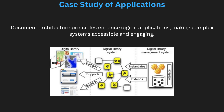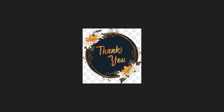Exploring case studies of applications that utilize these concepts helps illustrate the real-world benefits of document architecture and content management. Applications in e-learning, digital libraries, and online publishing demonstrate how principles like hypertext and standardized formats enhance user experiences. For instance, digital libraries rely on content management to organize and retrieve information, while e-learning platforms use hypertext to link related topics. These applications show how thoughtful design can make complex information systems accessible and user-friendly.